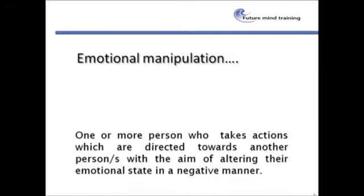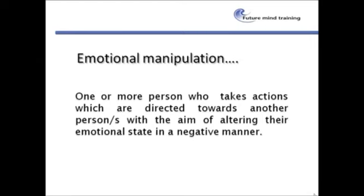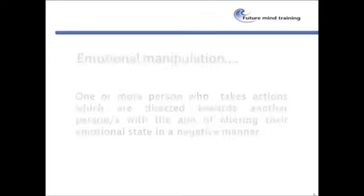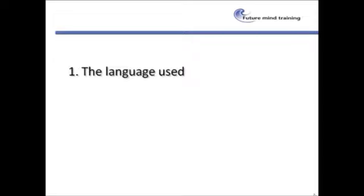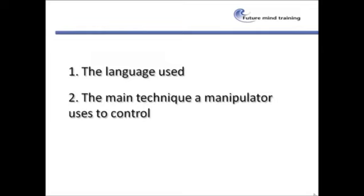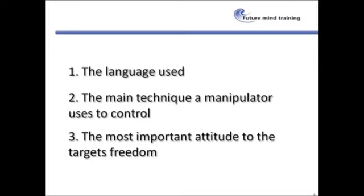The terminology I use to describe it: one or more people who take actions directed towards another person or people with the aim of altering their emotional state in a negative manner. We're going to cover three parts: part one is the language used to describe both parties; part two is the main technique a manipulator uses to control; and part three is the most important attitude to a target's freedom — and we'll explain what 'target' means in part one.